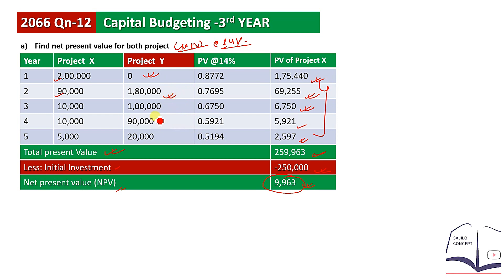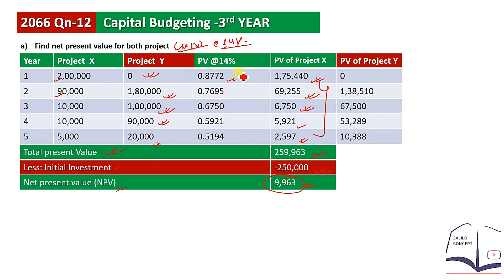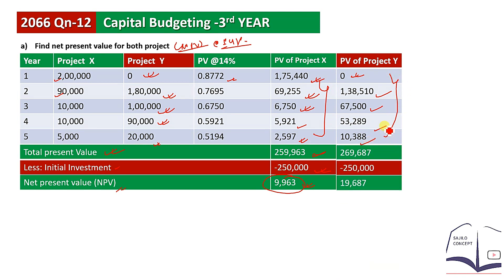The cash inflows are: 1,8,000; 1,04,000; 90,000; 1,4,000 giving a total of 2,99,000. After multiplying by discount factors, we get present values of approximately 1,38,510. Summing all discounted cash flows, we get a total present value of 2,69,687. After deducting the initial investment of 2,50,000, the net present value of Project X is 9,983 and of Project Y is 9,987.